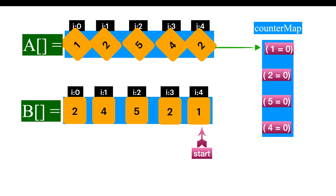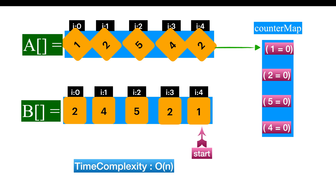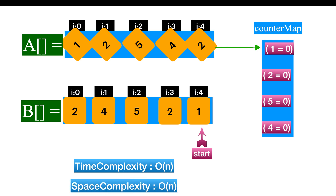The time complexity here will be linear because we are just traversing the arrays individually. We also maintain data in the hash map, but whatever operation you do on a hash map — whether it is search, get, or update — on average it is constant. So the time complexity will be linear and the space complexity will also be linear, because when elements are unique, the size of the hash map is equivalent to the array size.